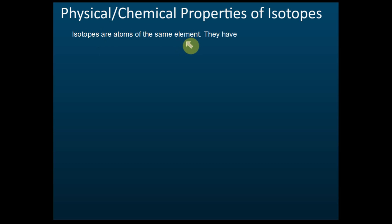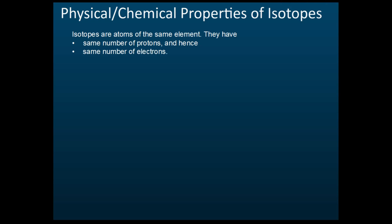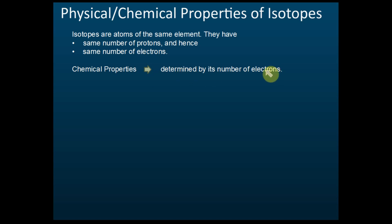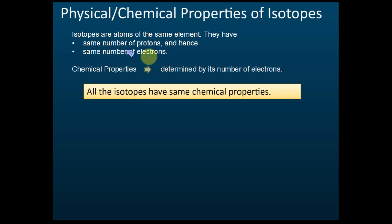Isotopes must be the same element — you cannot have one isotope being oxygen and another being hydrogen. Isotopes have the same number of protons, and since all atoms are neutral, they also have the same number of electrons. Therefore, they have the same chemical properties, because chemical properties are determined by the number of electrons.